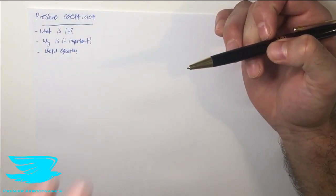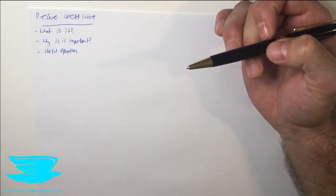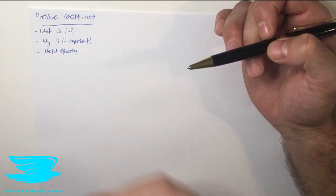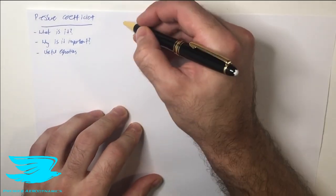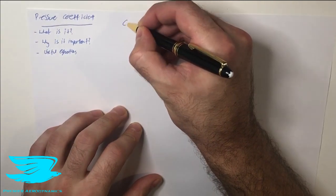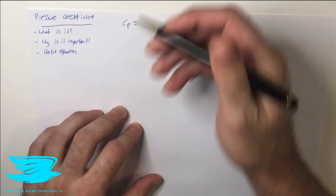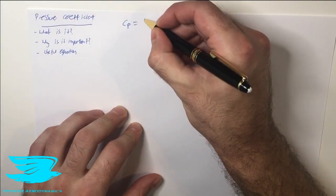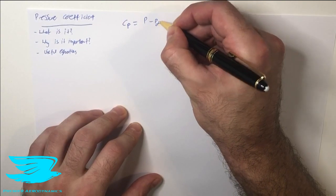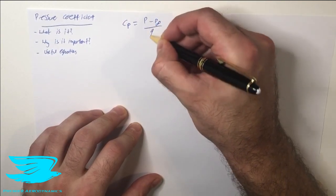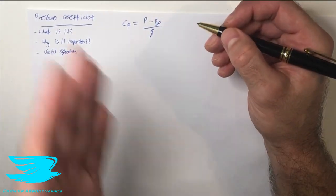Let me quickly write an equation first, and then we'll discuss what it means theoretically and from a practical point of view. So Cp, which is the pressure coefficient, equals p minus p infinity divided by q.